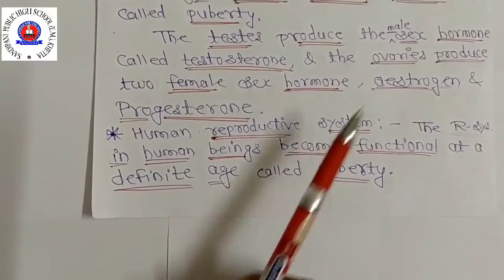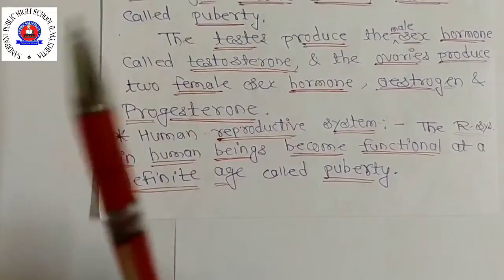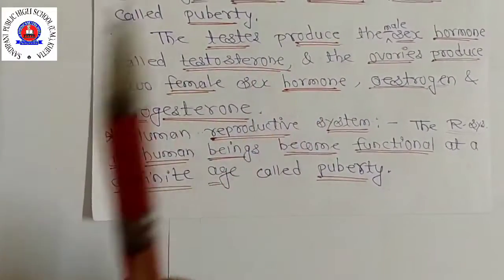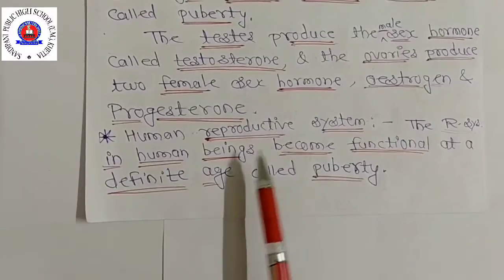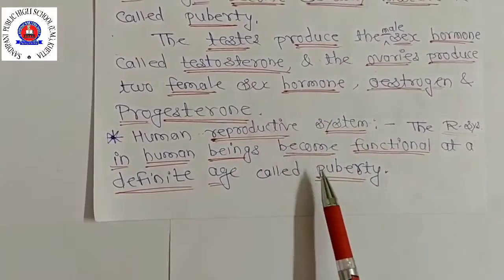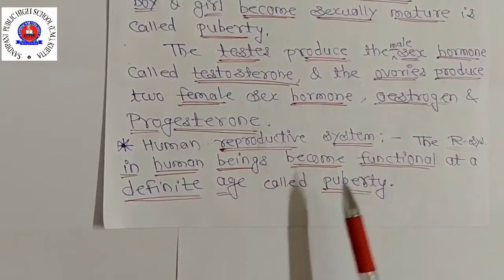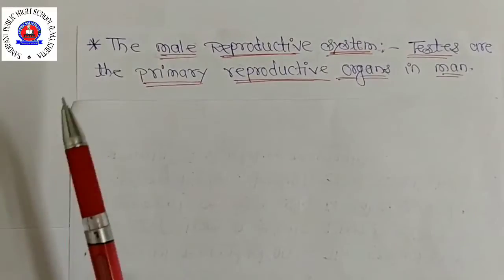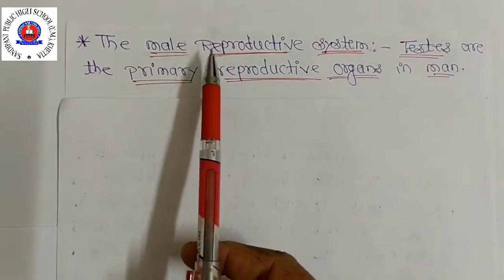The human reproductive system: humans use sexual mode of reproduction. Since the organs associated with reproduction in human males and females are different, the reproductive systems are known as the male reproductive system and female reproductive system respectively. These become functional at puberty — the stage when sex hormones begin to be produced and boys and girls become sexually mature.